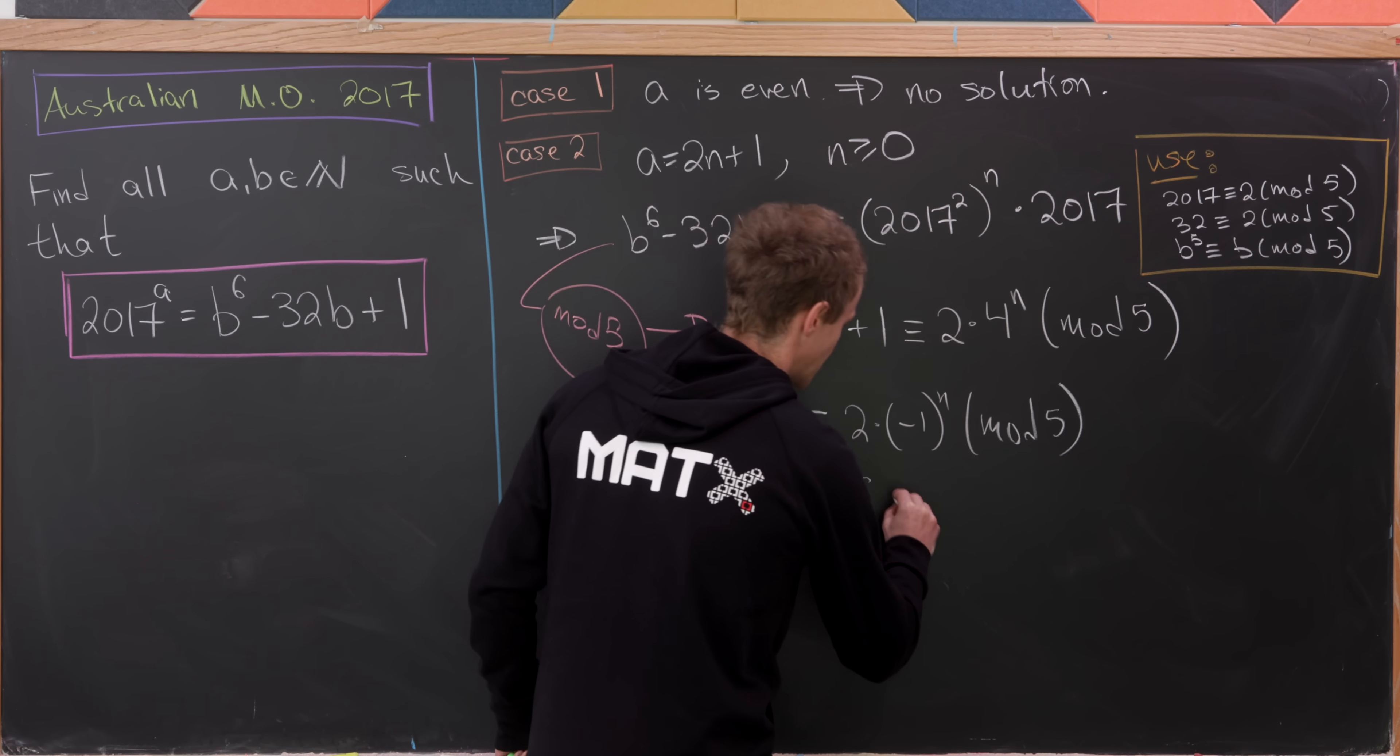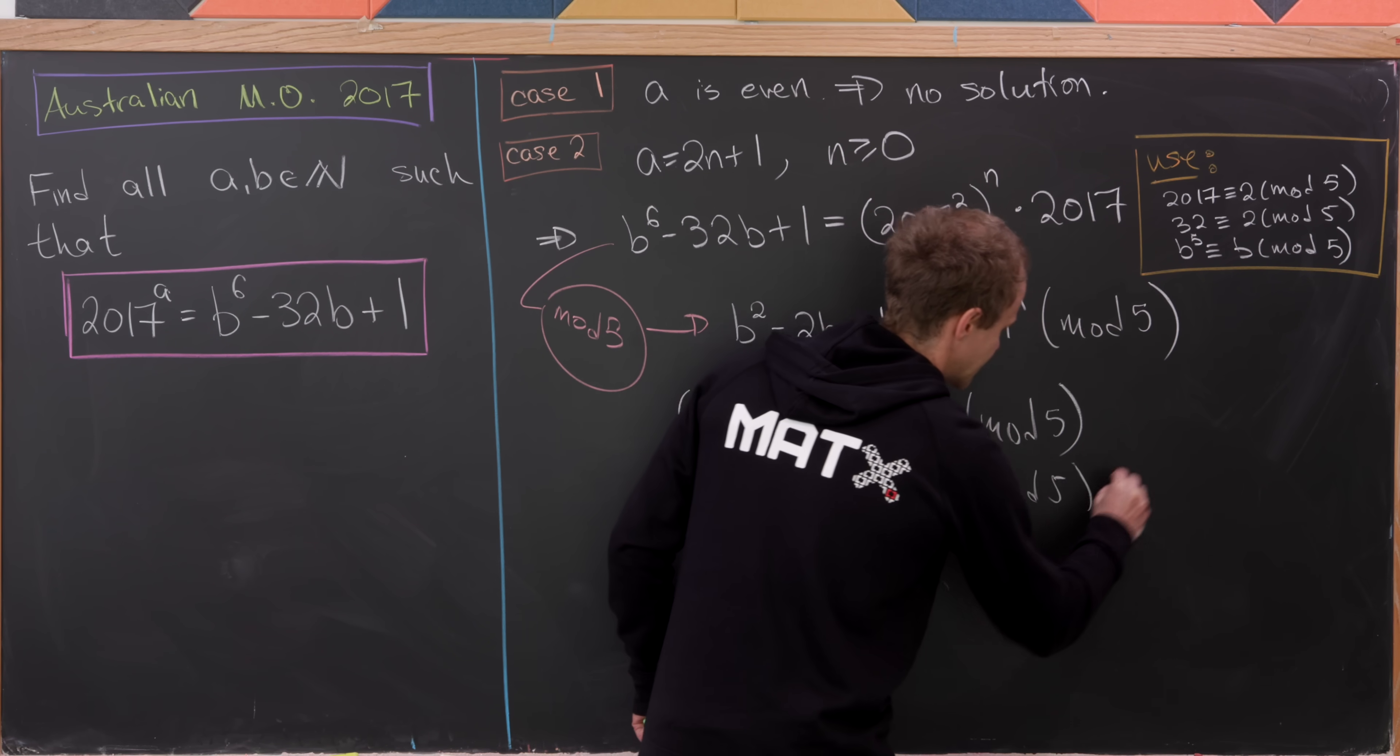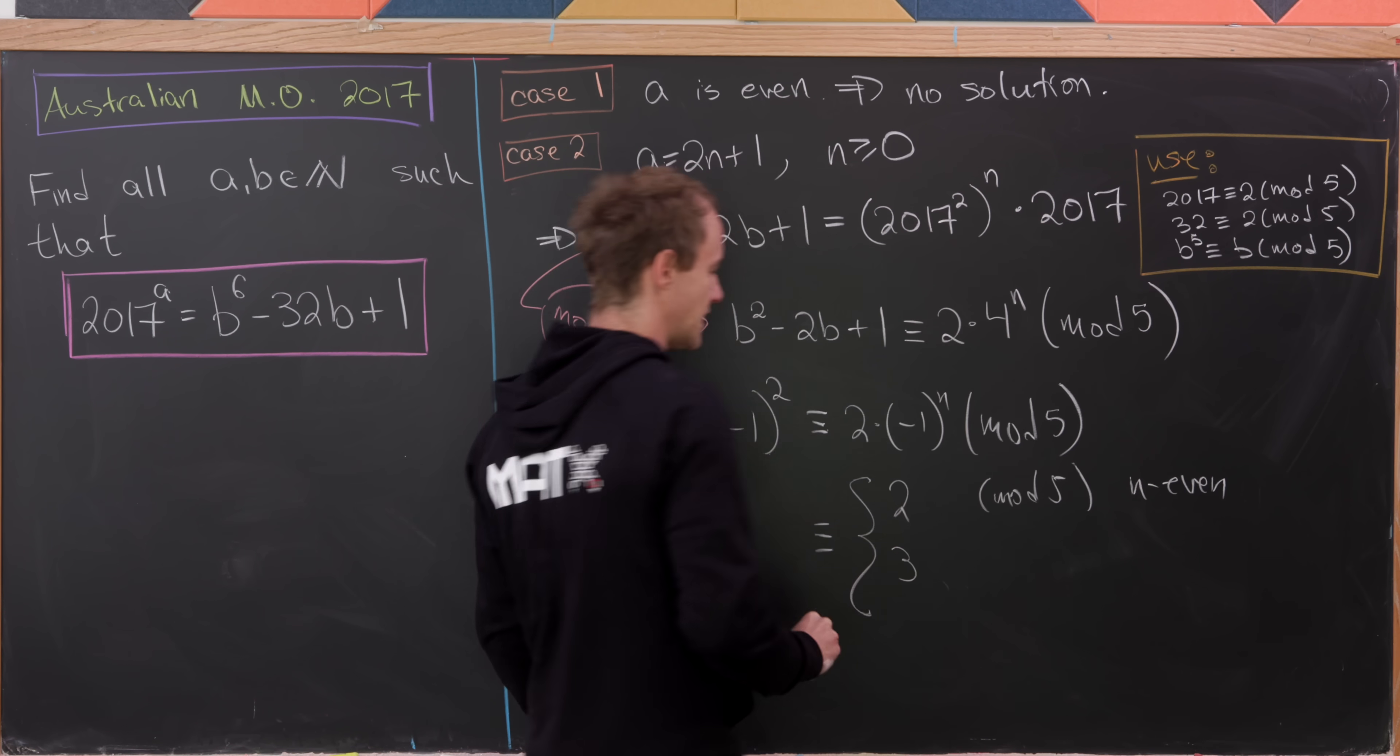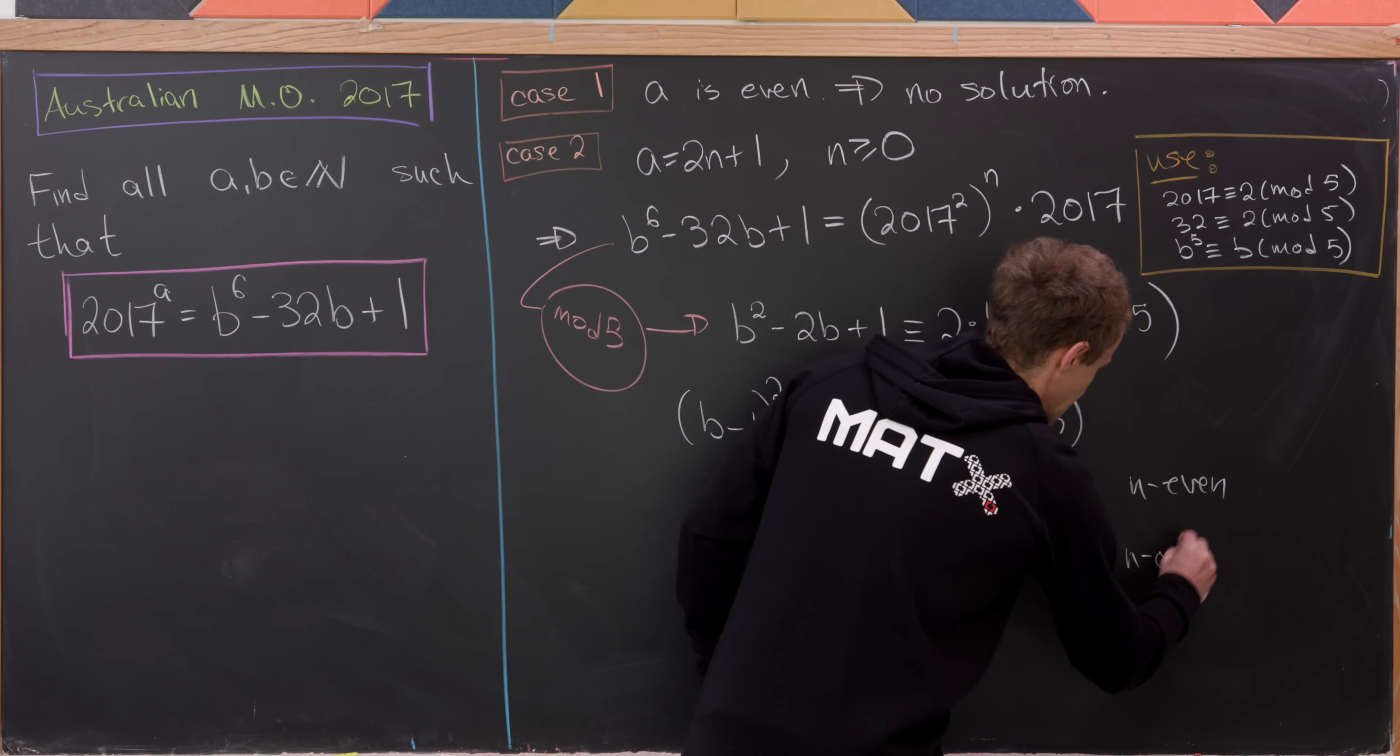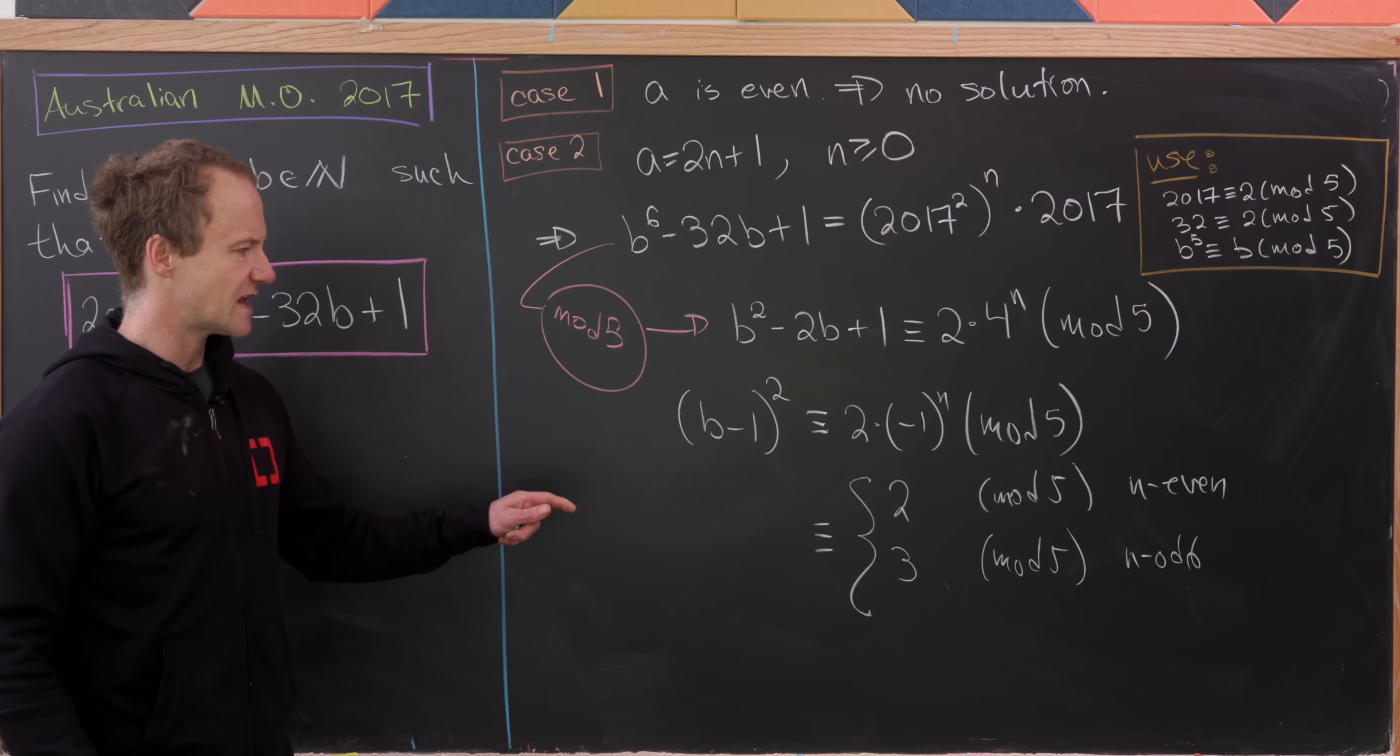So notice that that's equal to 2 mod 5 in the case when n is even, and 3 mod 5 when n is odd.